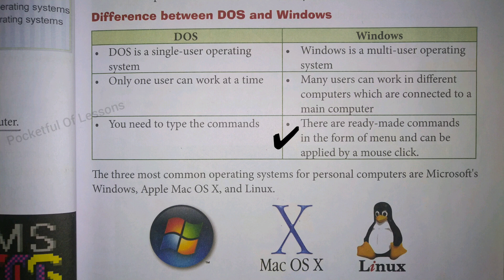On the Windows side, there are ready-made commands in the form of menus and they can be applied by a mouse click. In Windows, commands are pre-loaded in the form of menus — we just need to click the mouse. With one click, any application opens automatically. But in DOS, lengthy commands had to be written; they were very lengthy, and at that time whoever learned them was considered more intelligent.